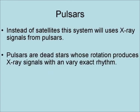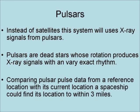Pulsars are dead stars whose rotation produces X-ray signals with a very exact rhythm. By comparing pulsar pulse data from a reference location with its current location, a spaceship could find its location in space within three miles.